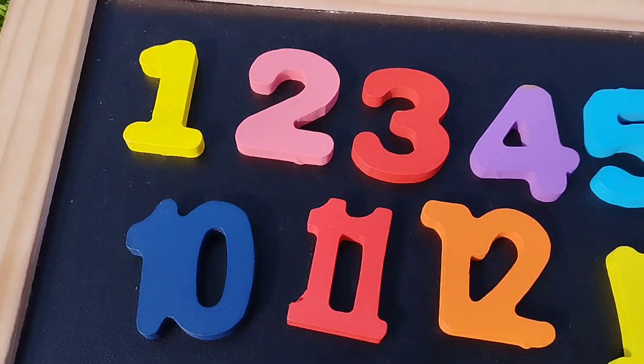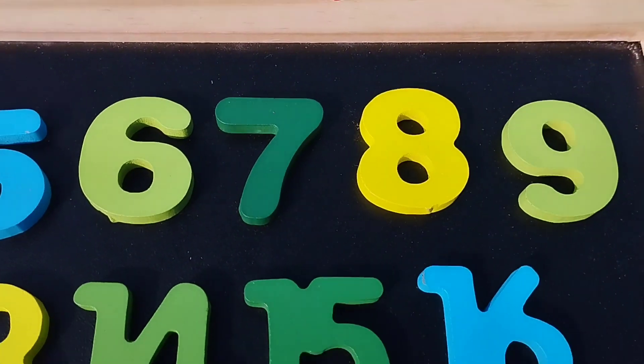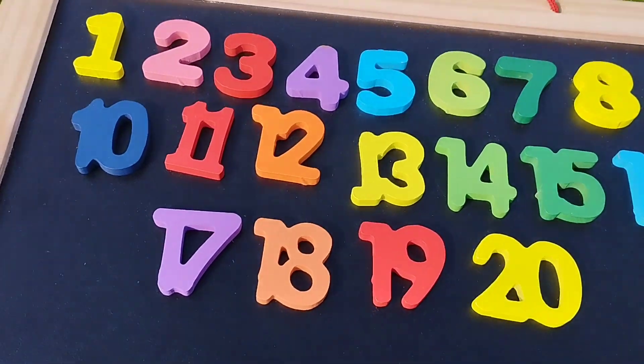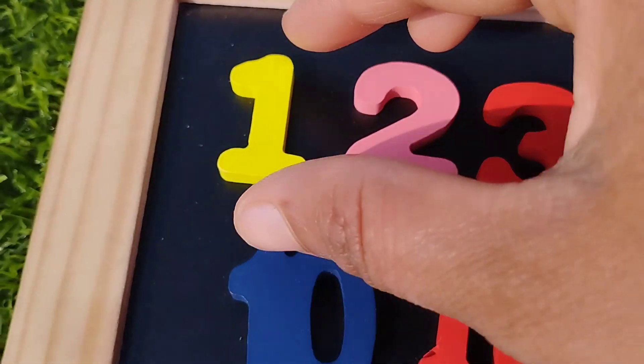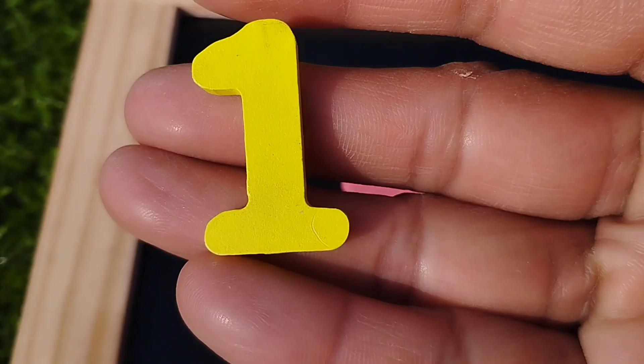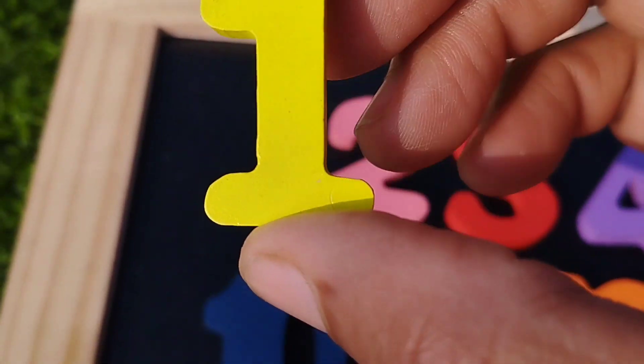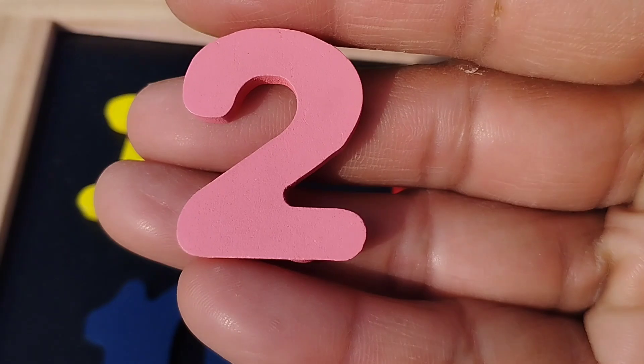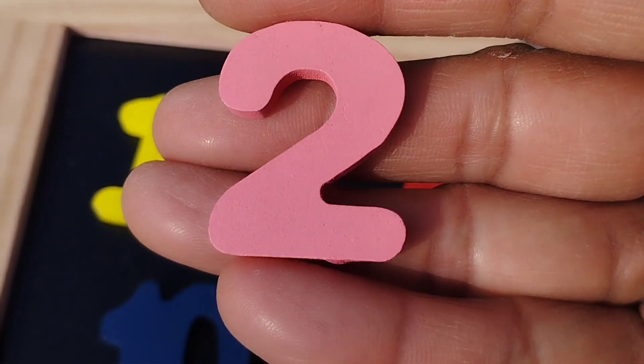Today we have a wooden number plot. We have wooden numbers 1 to 20. Let's learn their names. The first number is number 1. This is number 1, 2, number 2.